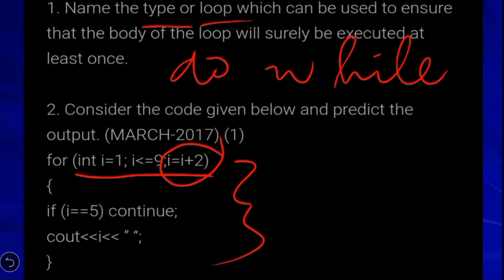Here, first i value is 1. We initialize and check the condition, then enter the for loop. Inside, we check: if i is equal to 5, then we execute the continue statement, which skips that iteration without printing. So when i equals 5, the print is skipped.